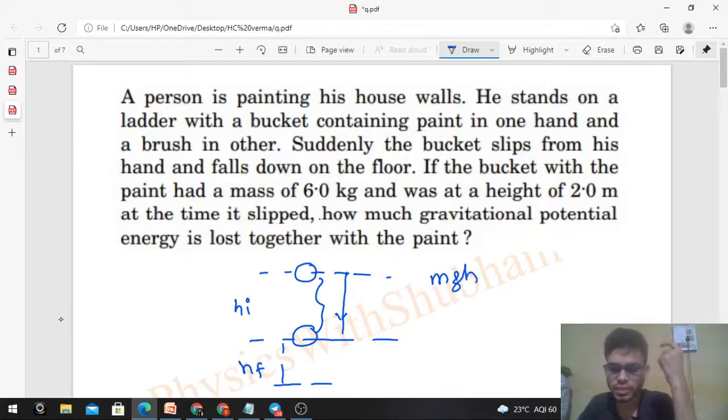You know, it's simple. You can find out the values. m is given 6 kilogram, g is given 9.81, and h value will be 2 meter. So from here you will get your answer. This is quite a simple problem.